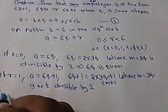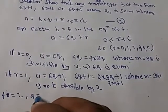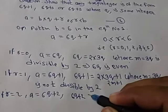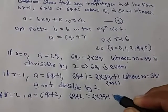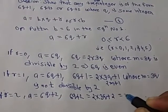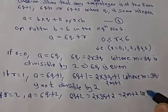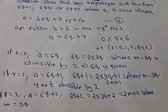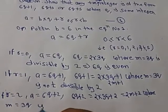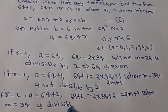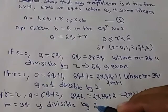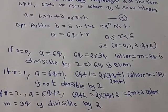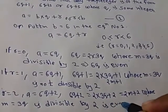If r equals 2, it means a equals 6q plus 2, which means 2 multiplied by 3q plus 2, giving 2m plus 2 where m equals 3q. This is divisible by 2, so 6q plus 2 is an even integer.